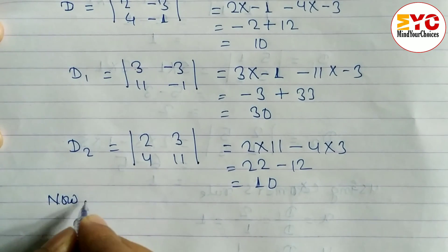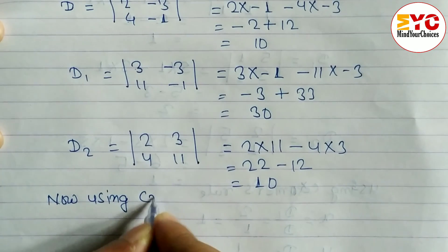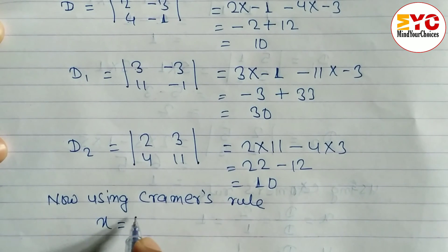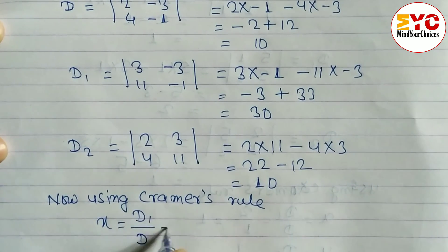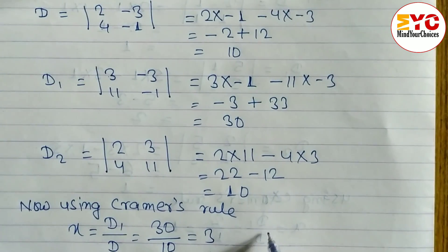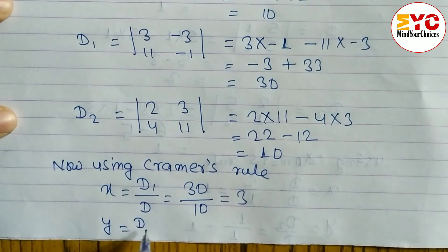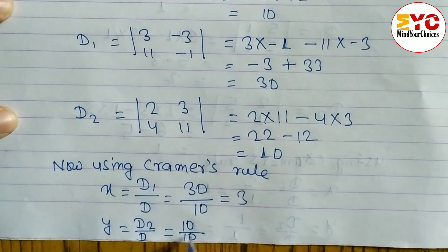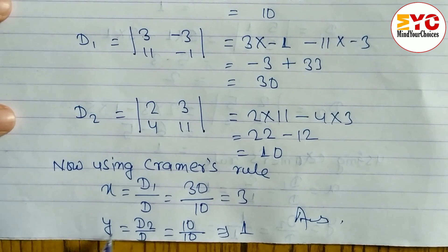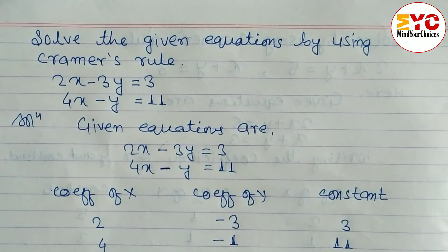Now using Cramer's rule: x is equal to D1 divided by D, which is 30 divided by 10, equal to 3. Similarly, y is equal to D2 divided by D, which is 10 divided by 10, equal to 1. So x equals 3 and y equals 1.